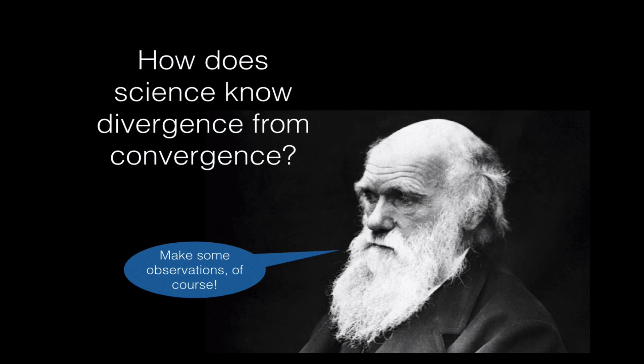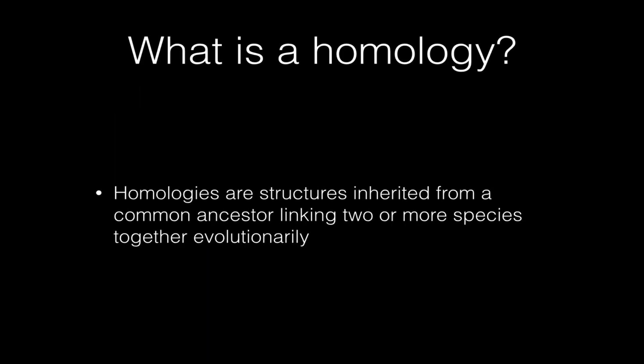The simple answer to this is, you make some observations. In science, observations are what form the basis of conclusions. And it's even better if these observations are repeatable, or if they are reinforced by data coming from different sciences, or from different directions. So the most important way to tell that divergent evolution has happened is to look for what we call homologies.